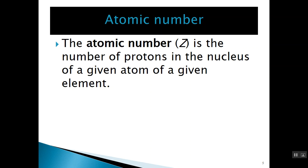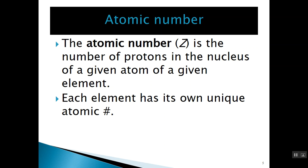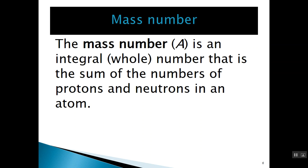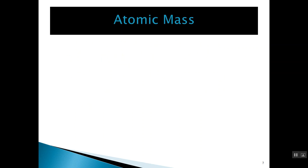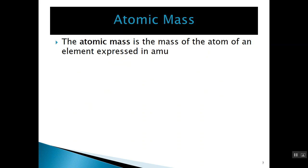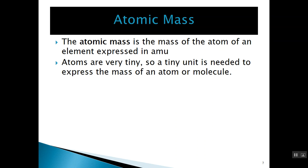Let's review some definitions. The atomic number is the number of protons in the nucleus of any atom of a given element, and each element has its own unique atomic number. The mass number is the integer which represents the sum of the numbers of protons and neutrons present in the nucleus of an atom. The atomic mass, which is different from the mass number and is often confused with it, is the mass of an atom expressed in the atomic mass unit scale.